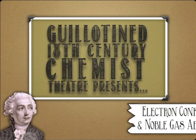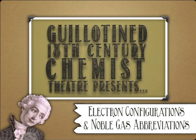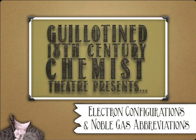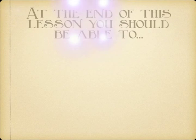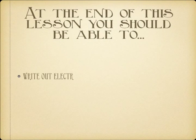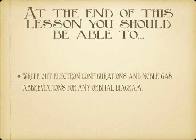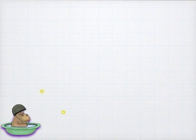Hello and welcome back to Guillotine 18th Century Chemist Theatre. Today we are going to build off of the orbital diagrams that we learned about last time and talk about two little extensions: the idea of an electron configuration and the noble gas abbreviation, each of which is sort of a cascading abbreviation. You'll be amazed at how small you can represent the orbital diagram with the proper abbreviation techniques.